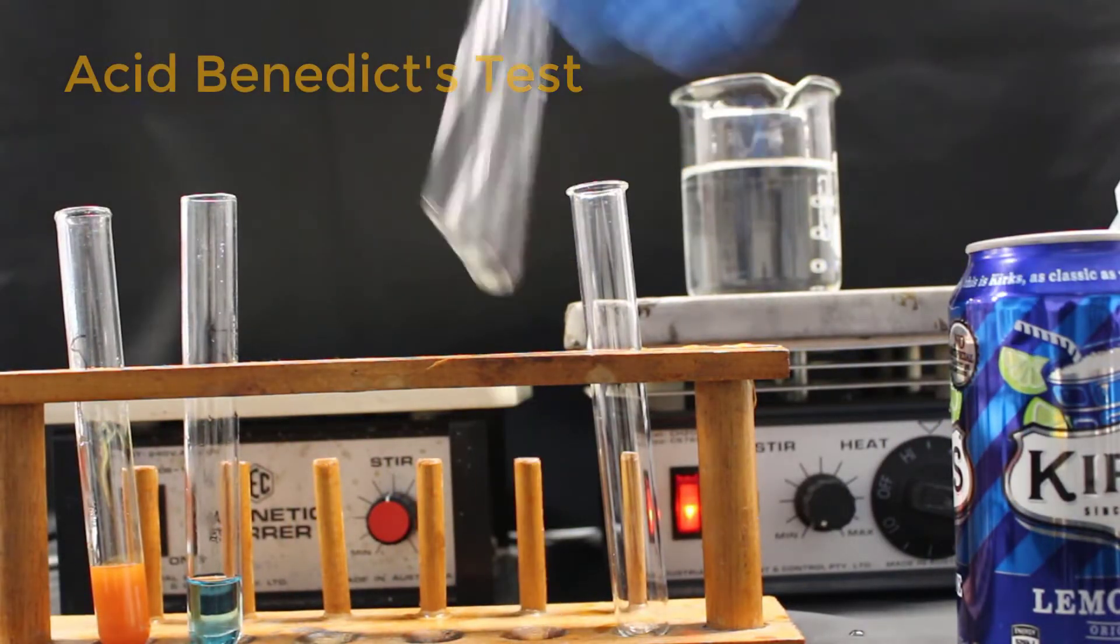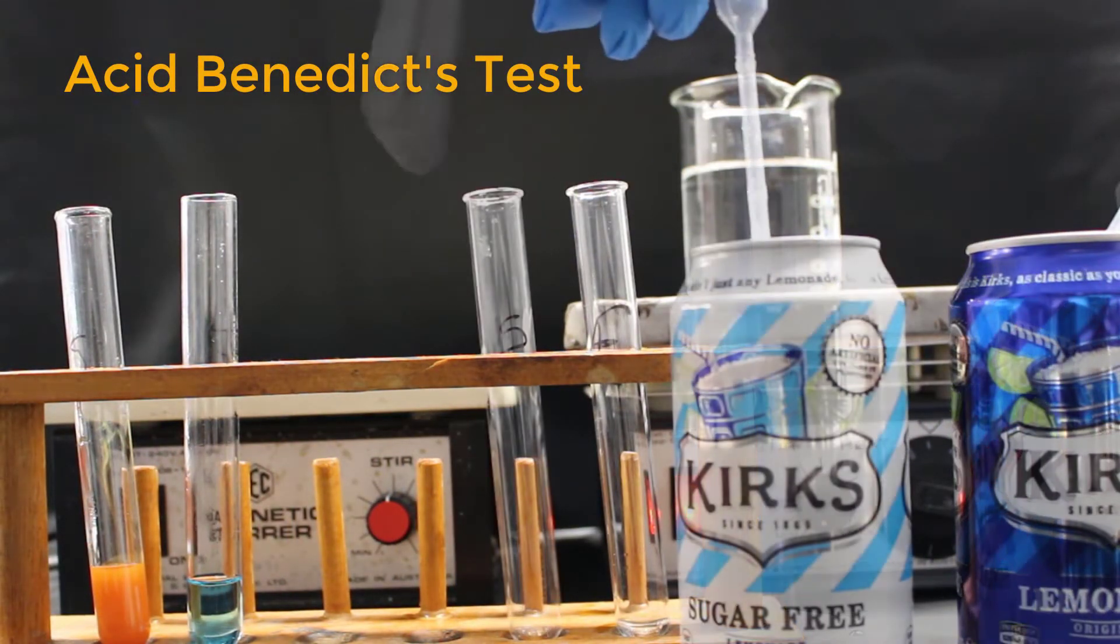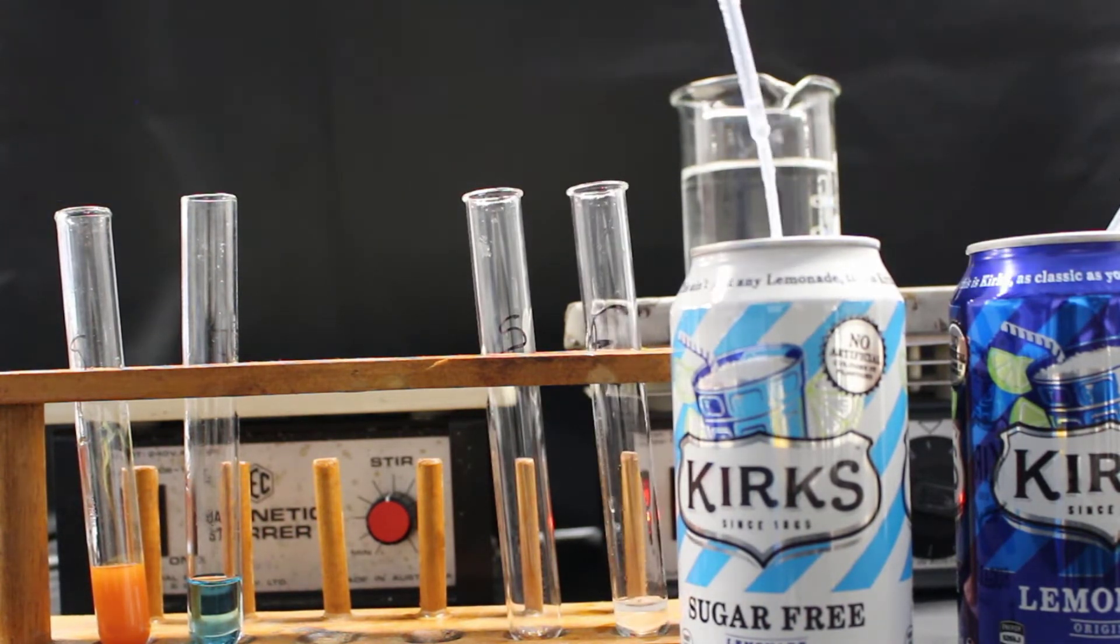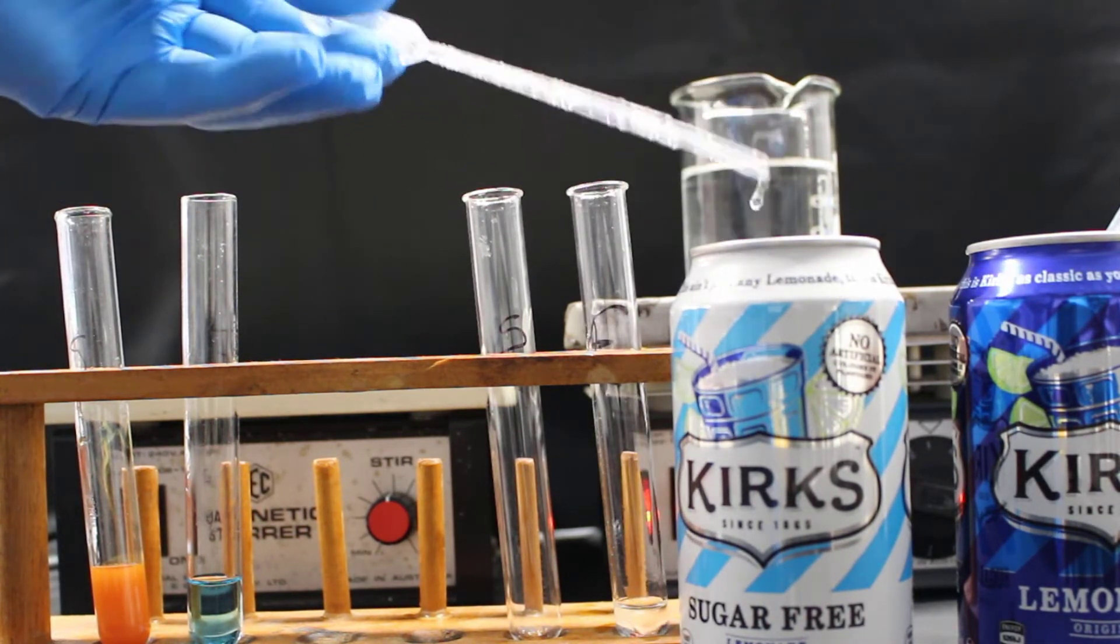The second test is Acid Benedict's Test. And it's a test for a different type of sugar called sucrose. Sucrose is table sugar.